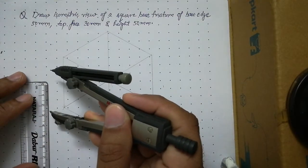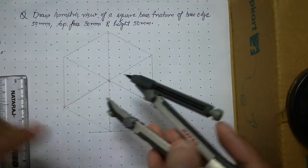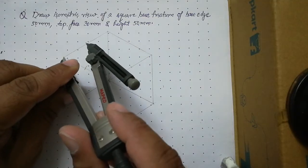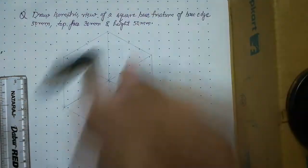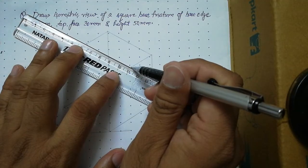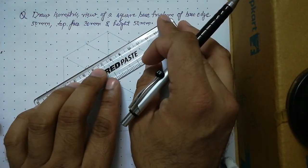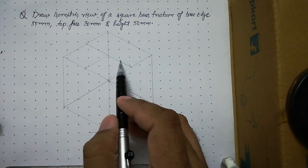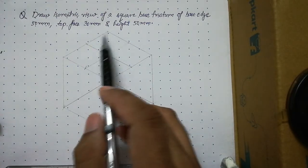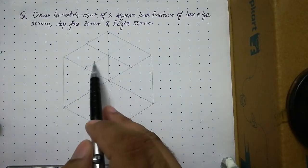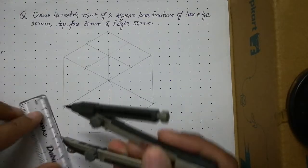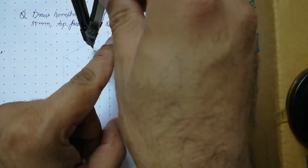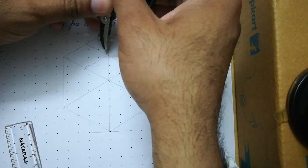All sides are 50 mm, so open your compass to 25 mm and mark the midpoints of all four sides. Join these midpoints with thin lines to form two center lines and locate the center. From the center, mark 15 mm along all four axes — because the top face is 30×30, each half-side is 15 mm. Open the compass to 15 mm and mark 15 mm from the center on each of the four axes.